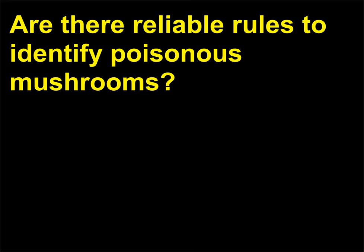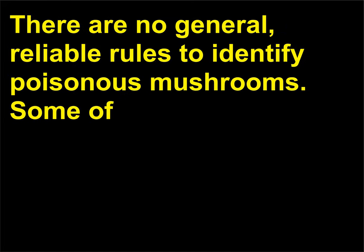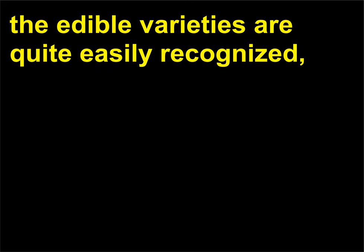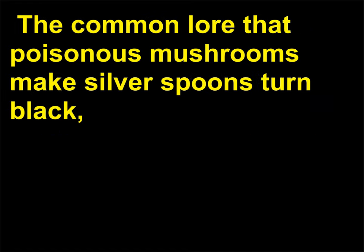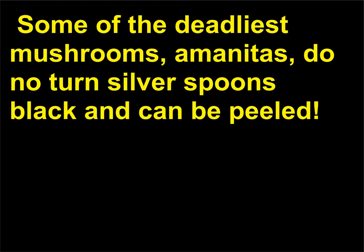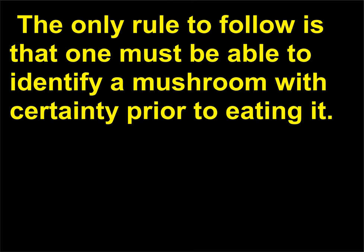Are there reliable rules to identify poisonous mushrooms? There are no general, reliable rules to identify poisonous mushrooms. Some of the edible varieties are quite easily recognized, but some edible varieties closely resemble poisonous mushrooms and can only be distinguished by an expert. The common lore that poisonous mushrooms make silver spoons turn black, while mushrooms that can be peeled are edible, is not true. Some of the deadliest mushrooms, amanitas, do not turn silver spoons black and can be peeled. The only rule to follow is that one must be able to identify a mushroom with certainty prior to eating it.